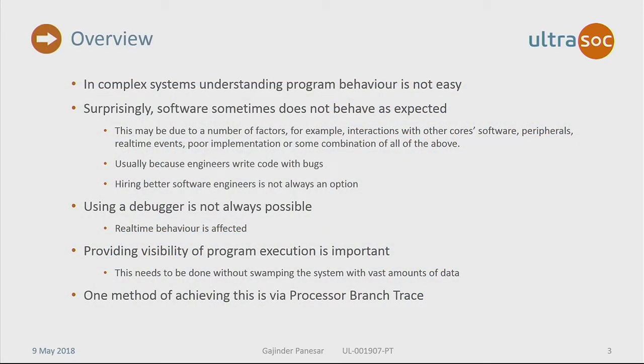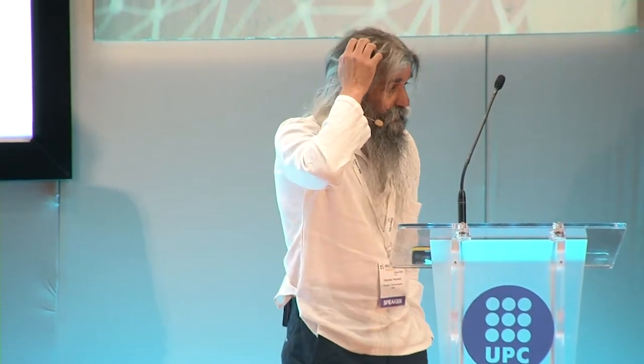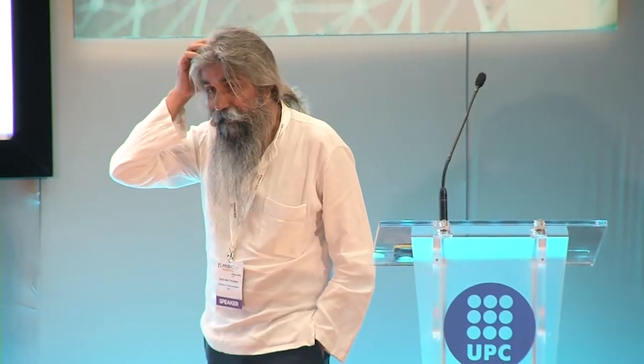Complex systems are getting even more complex and understanding how a system behaves is not easy at all. Surprisingly, it comes as a shock to many people: software sometimes doesn't work as expected. This may be due to factors like being implemented incorrectly, real-time events not working, or some external event affecting the program behavior. But it's usually because software engineers write code with bugs in it.